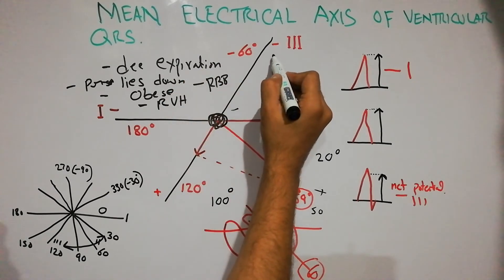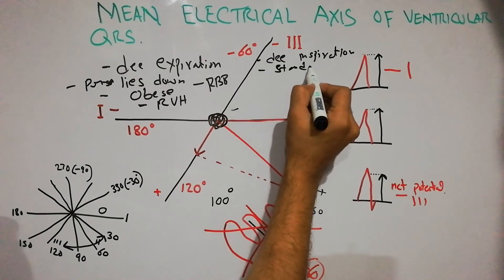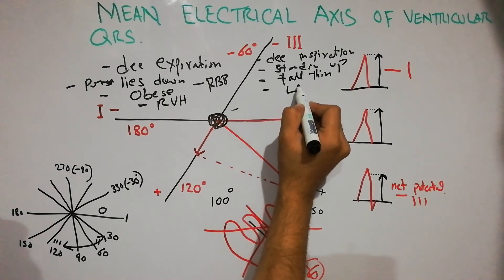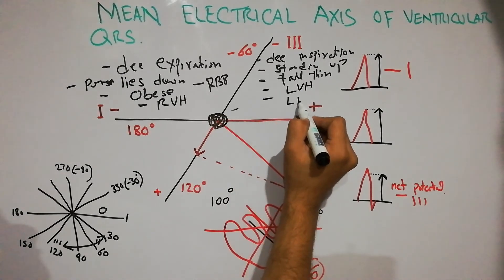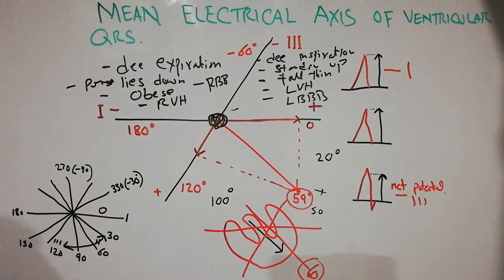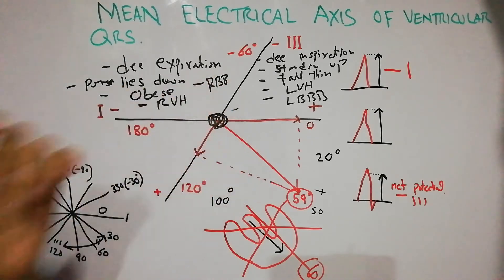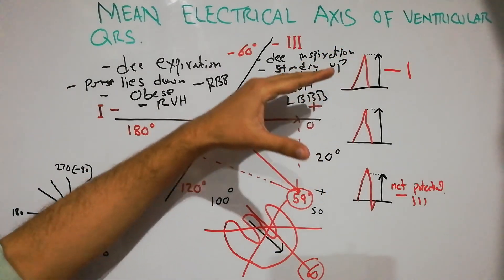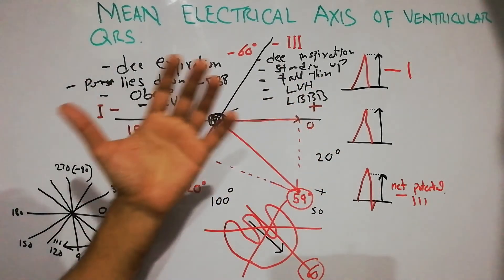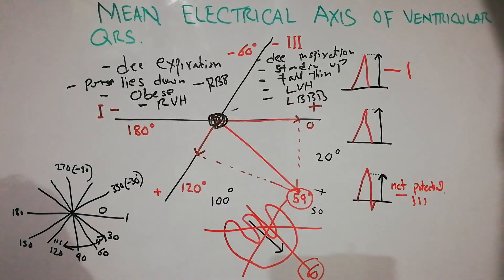Similarly, some factors can shift this vector to the left side, which is known as left axis deviation. These factors include deep inspiration, standing up, being a tall and thin person, left ventricular hypertrophy, and left bundle branch block. How the vectors for left and right axis deviation in hypertrophy and bundle branch block are calculated will be discussed in the next lecture.